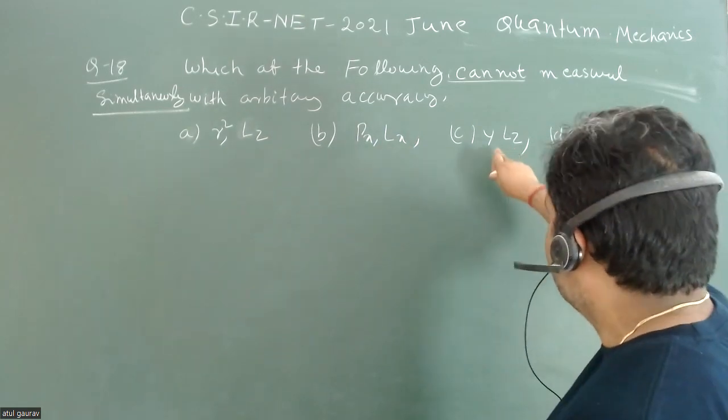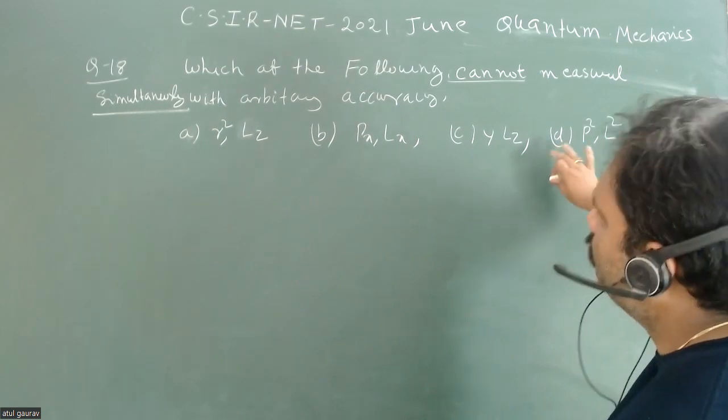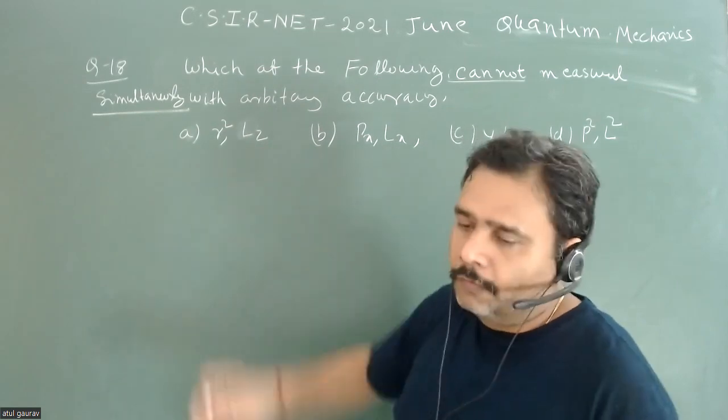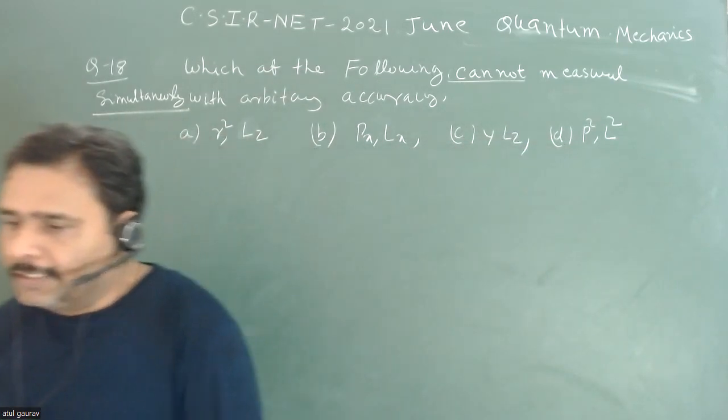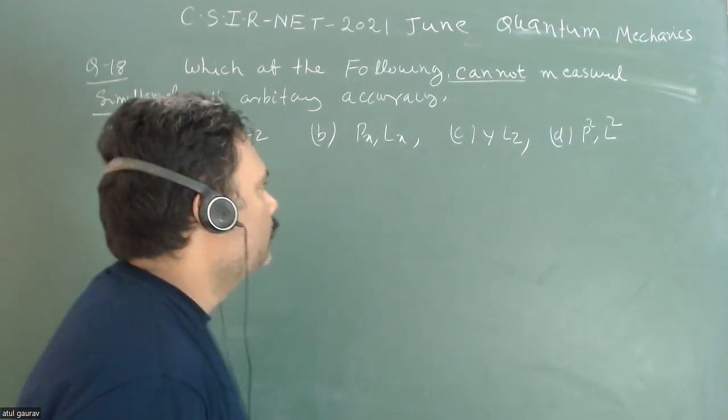But when you check y Lz, that will not be zero - this is very interesting. P² and L² will also be zero. Let's calculate this one, otherwise you can practice all of these. I'm just going for the correct option.